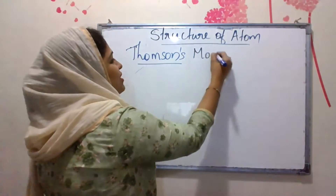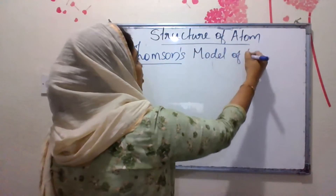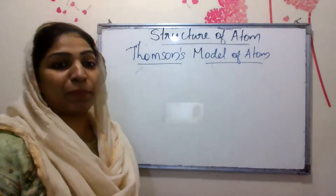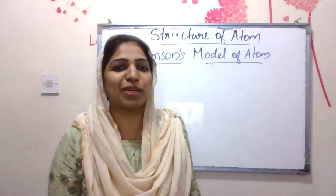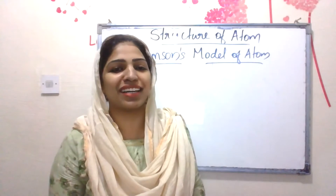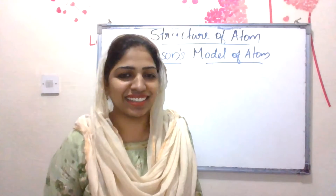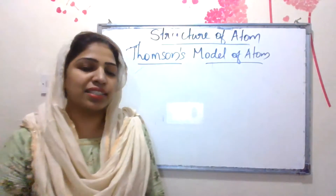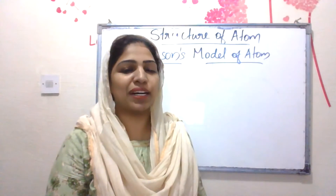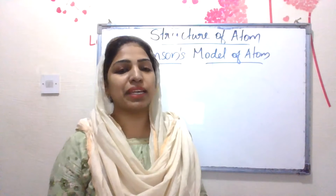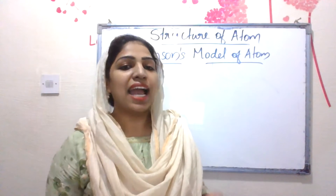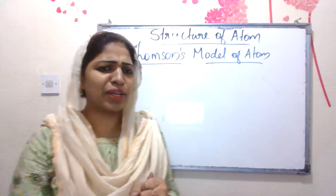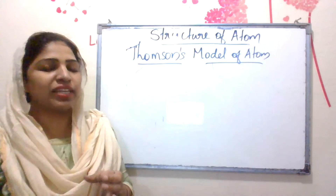Thomson's Model of Atom has two names. One is the plum pudding model of atom, or the Christmas pudding model of atom, or the watermelon model of atom. J.J. Thomson's model states that the atom is electrically neutral. The atom is made up of subatomic particles — there are three: neutron, electron, and proton.